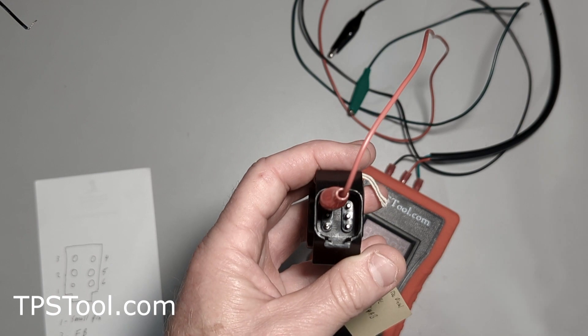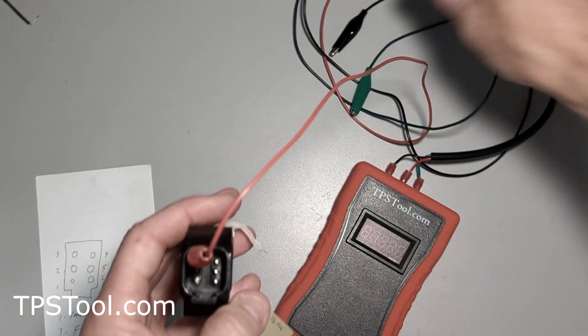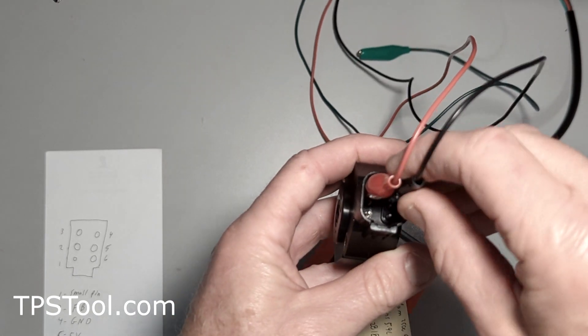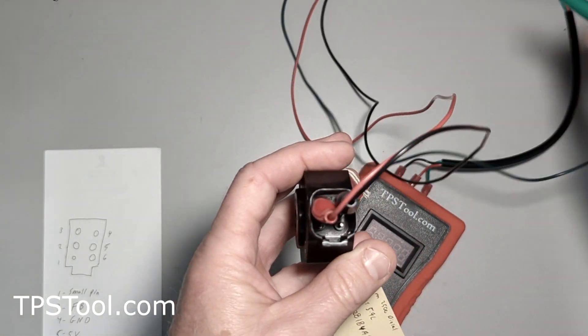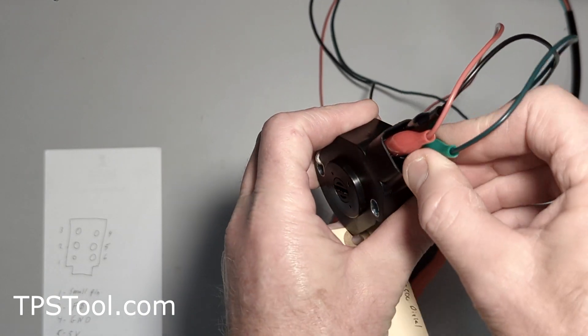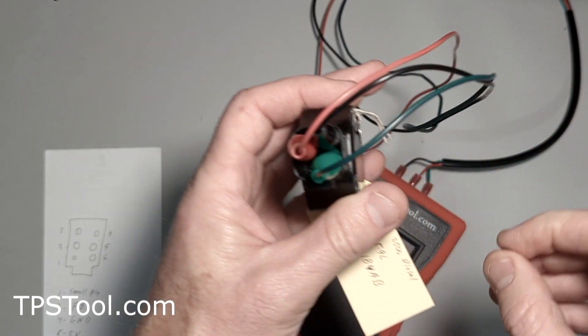Pin four is the ground. That's the top right one, so we're going to use our black wire here. And then the one below that, pin five, is our five volts. We're going to connect that here. I know it looks awfully crowded in there, but there's enough room. There we go.